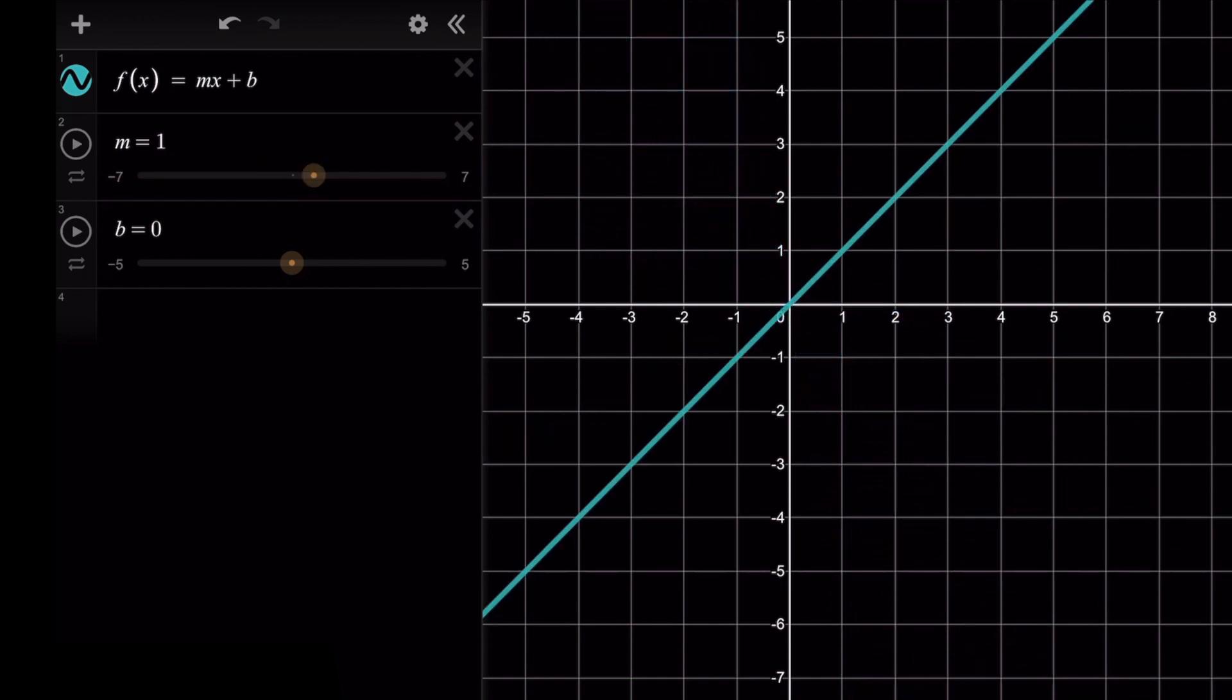Then just to mention, if we have m equals zero, you can see we're here in this horizontal line. So this line has no slope, and so we just have that b value left when m is zero. So it gets rid of the x, and now we just have the b. And so this is our horizontal line.